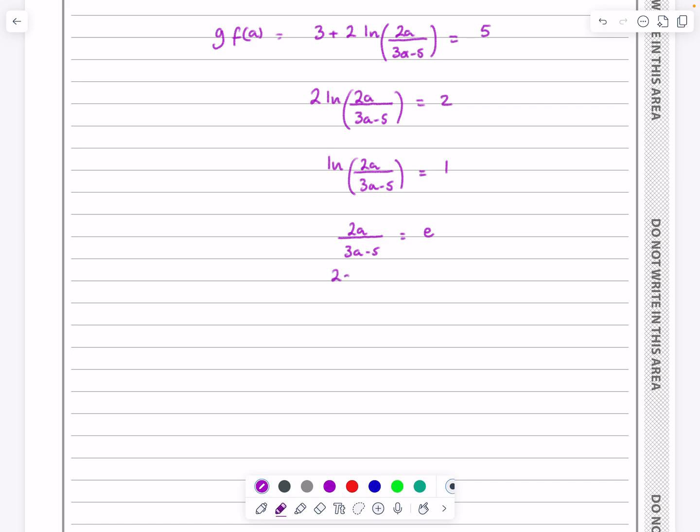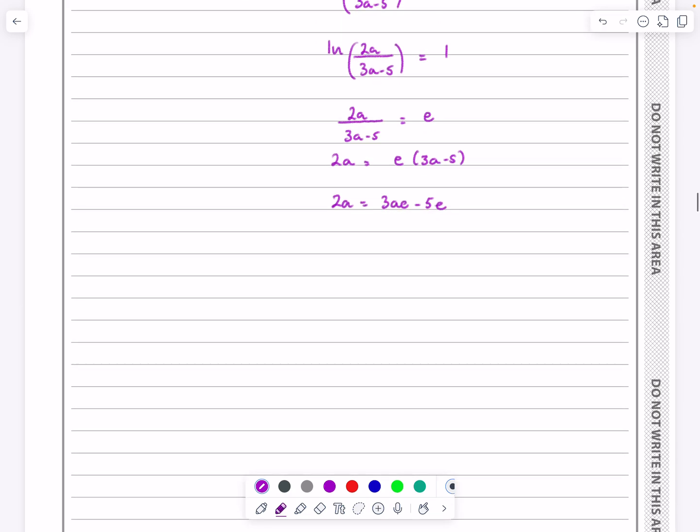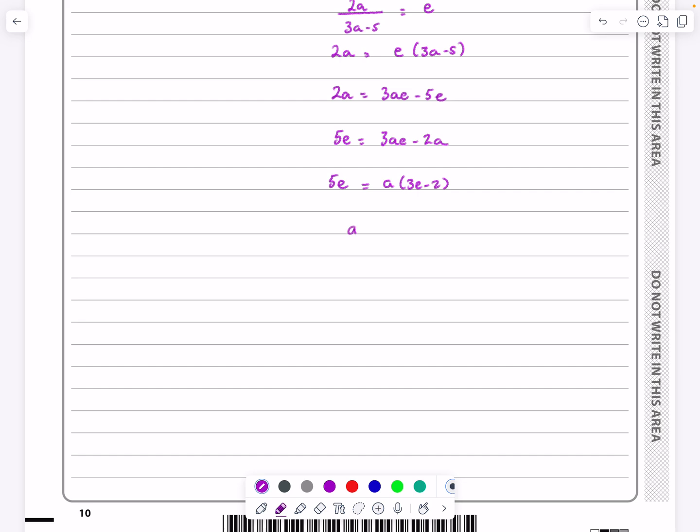So 2a will equal to e times 3a minus 5. Multiply it out, 2a is going to be 3ae minus 5e. Collect the e's on one side, sorry, collect the a's on one side and everything else on the other side. I'm actually going to swap that one round and say 3ae minus 2a. Take a out as a factor. 3e minus 2 times a is equal to 5e.